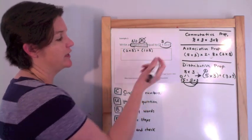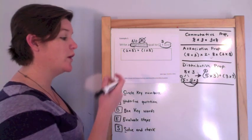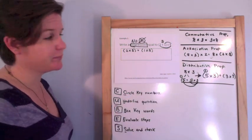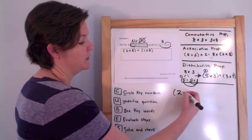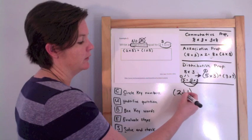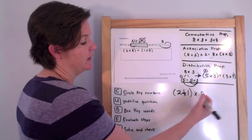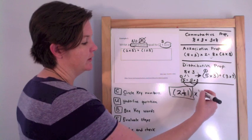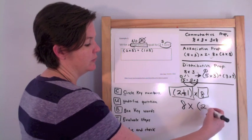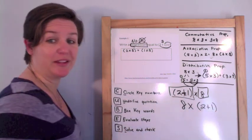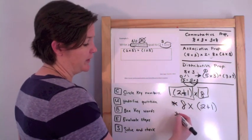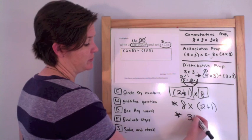I don't have to solve it. I just have to write an expression equal to it. That would be one possible answer. You could also look at this from a commutative property stance — 2 plus 1 times 8, considering each part to be a factor, you could swap it around and write 8 times 2 plus 1. That would be like using the commutative property. A final option is just rewriting it as 3 times 8.